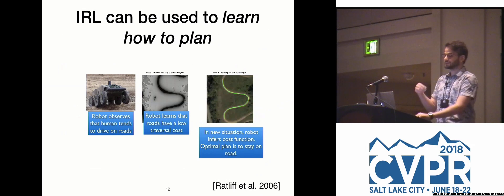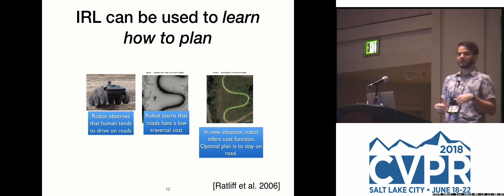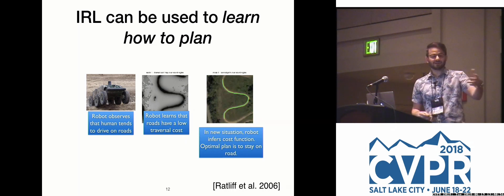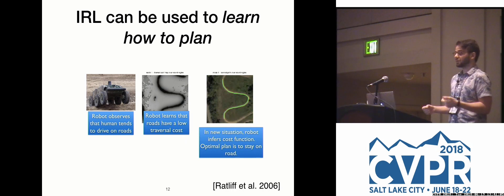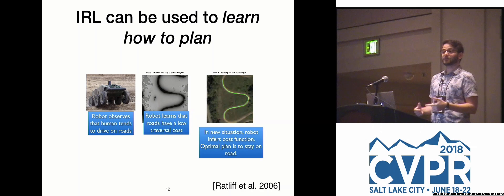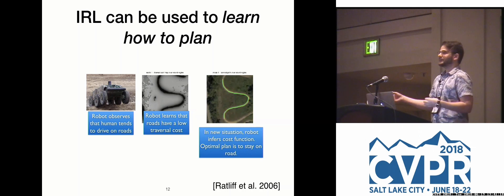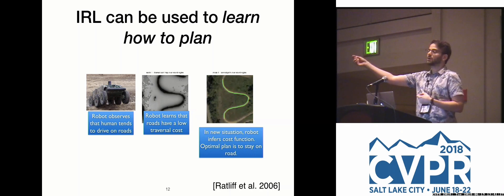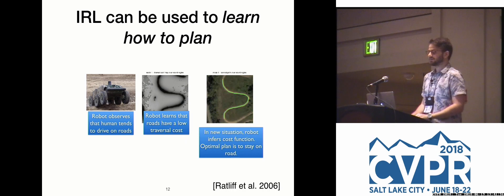IRL can also be used to learn how to plan. If we have some fixed goal and want our agent to achieve it in a reasonable way, IRL can find a trajectory that achieves this goal. For example, if a robot is driven by a human who prefers roads over woods, we infer rewards saying it's better to be on the road. In a new setting, if rewards generalize properly, the robot should stay on the road and find a trajectory to a given goal. This was done in Ratliff et al. 2006, one of the first practical IRL approaches.